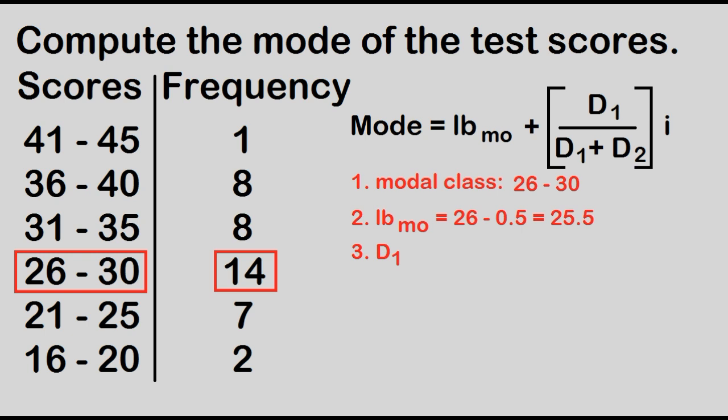D sub 1 is the highest frequency minus the frequency of the next lower class. D sub 1 is equal to 14 minus 7 is equal to 7.